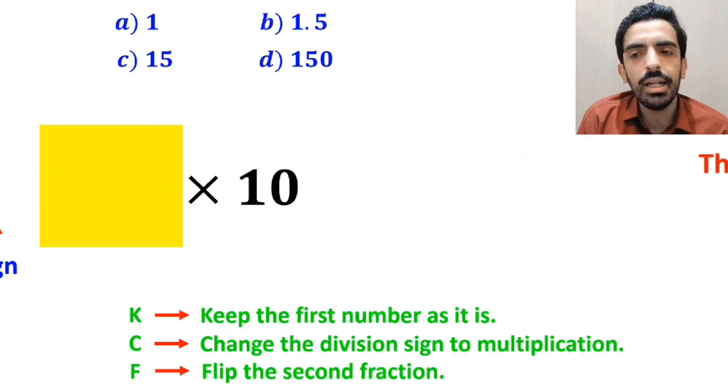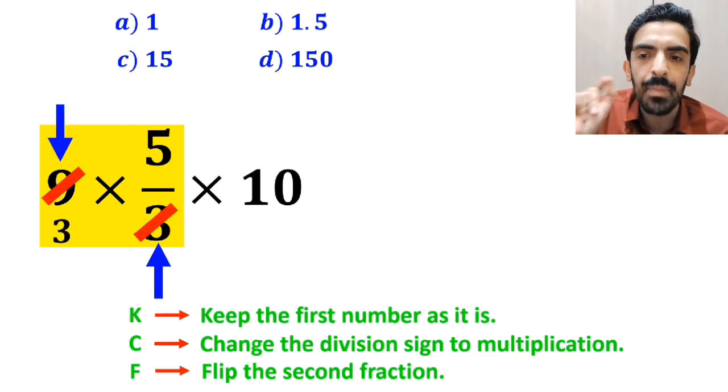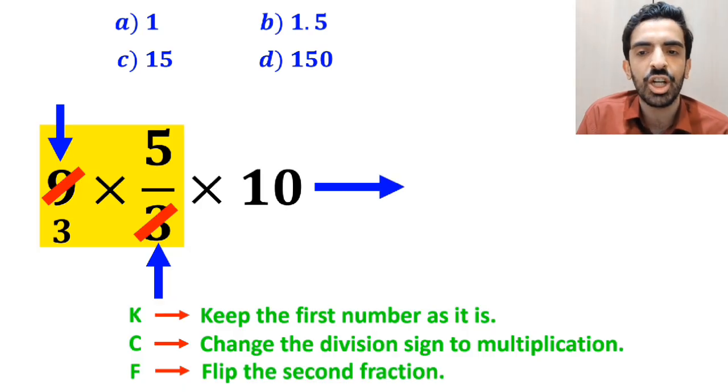So, we remove the highlighted part and replace it with 9 times 5 over 3 multiplied by 10. Now, we can easily simplify the number 9 with the 3 in the denominator, and instead of this expression, we can write 15 times 10,